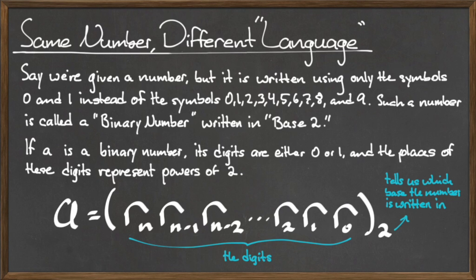To indicate that a given number is written in base 2 rather than base 10, we subscript the last digit, the rightmost digit, with a 2.